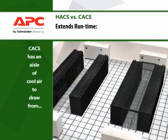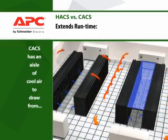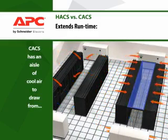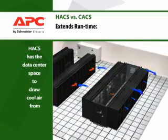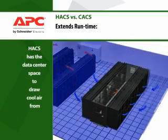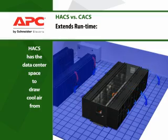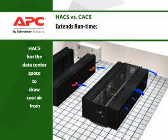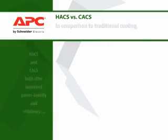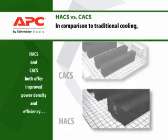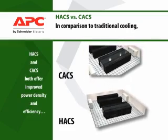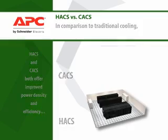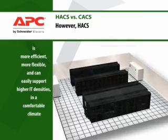A significant advantage that the hot aisle system has over the cold aisle system is the ability to extend runtime. In the event of a cooling failure, runtime is decreased with CACS, because the cold air used to cool the IT equipment is drawn only from the center aisle. In HACS, the equipment will draw the cold air from the entire data center, resulting in fewer cooling failures and extended runtimes.